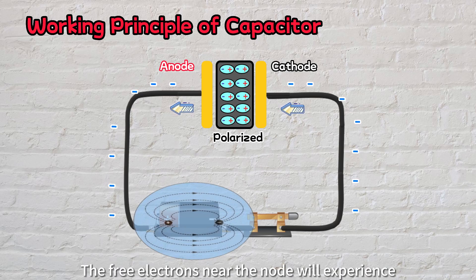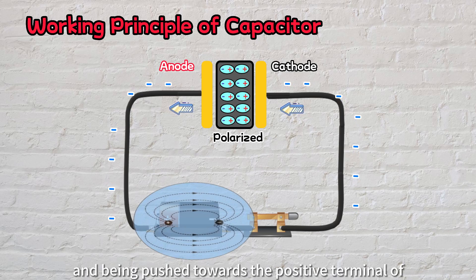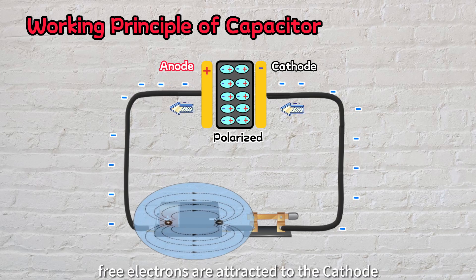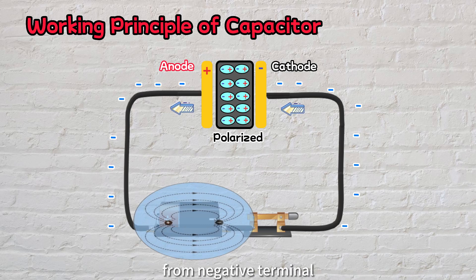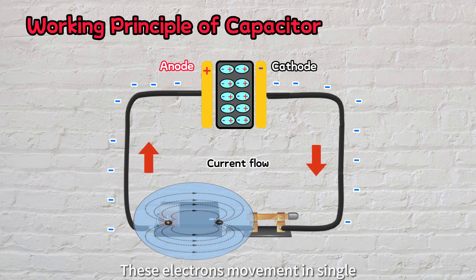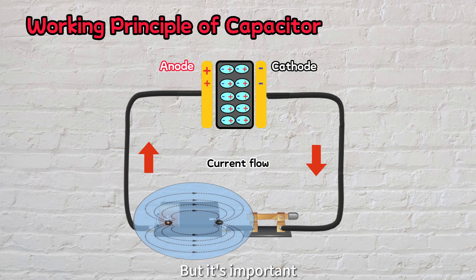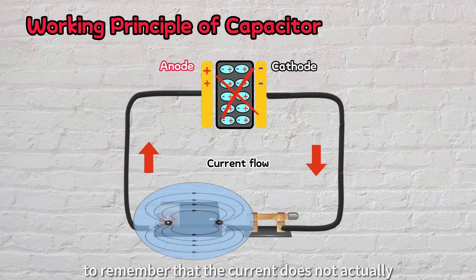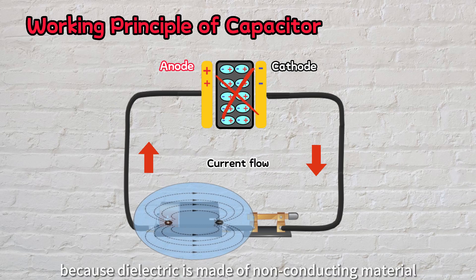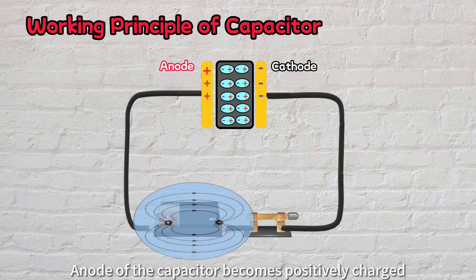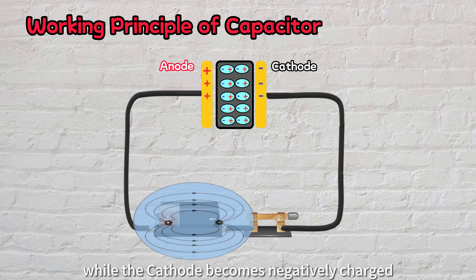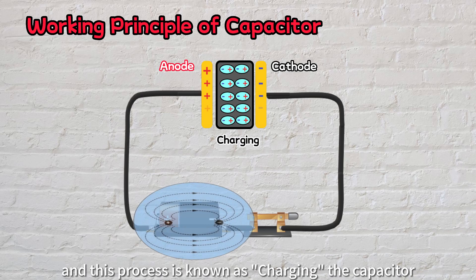The free electrons near the anode will experience a repulsive force and be pushed towards the positive terminal of the power source. On the other hand, free electrons are attracted to the cathode from the negative terminal. This electrons' movement in a single direction is also considered as current flowing. But it's important to remember that the current does not actually flow between the two conductor plates, because the dielectric is made of non-conducting material. As the charges accumulate, the anode of the capacitor becomes positively charged while the cathode becomes negatively charged, and this process is known as charging the capacitor.